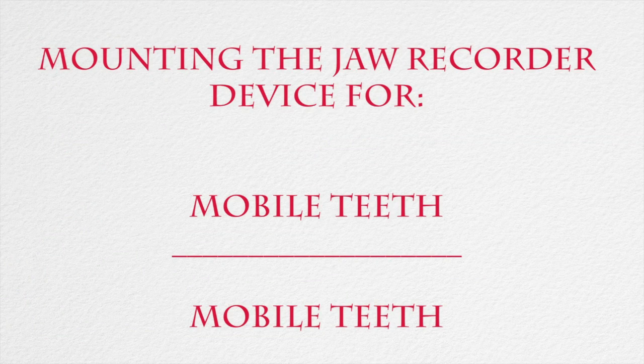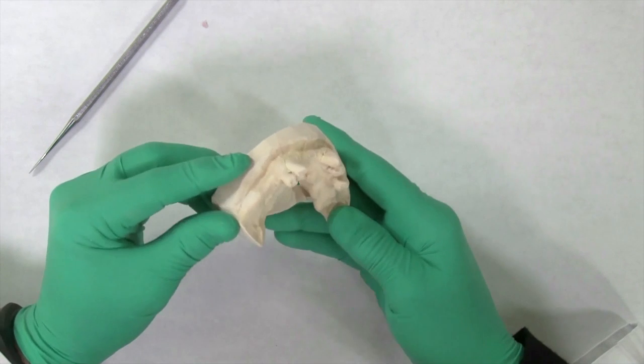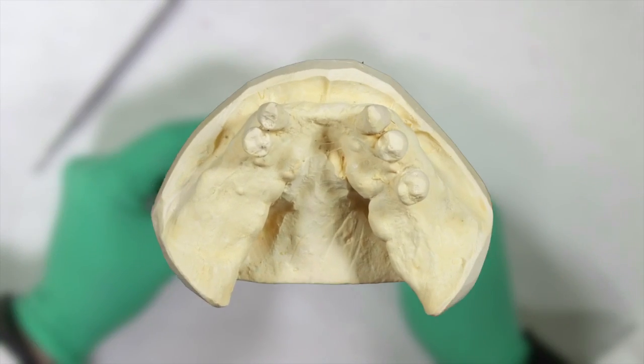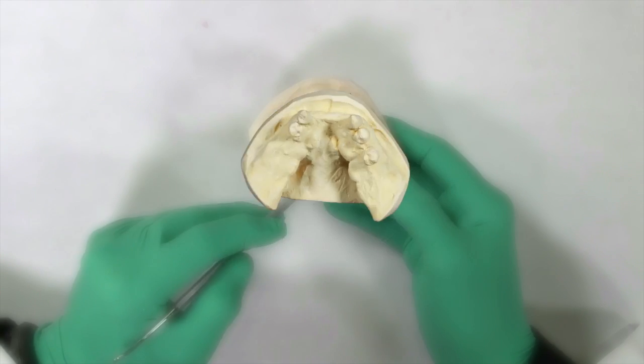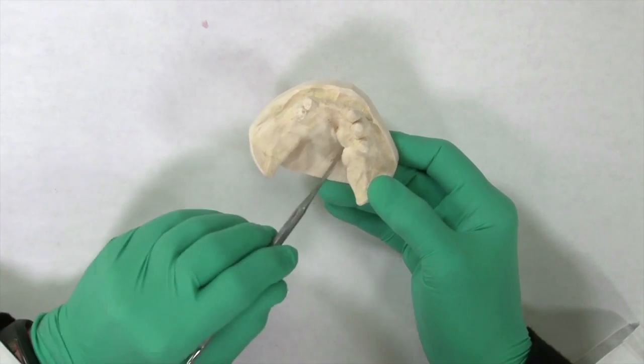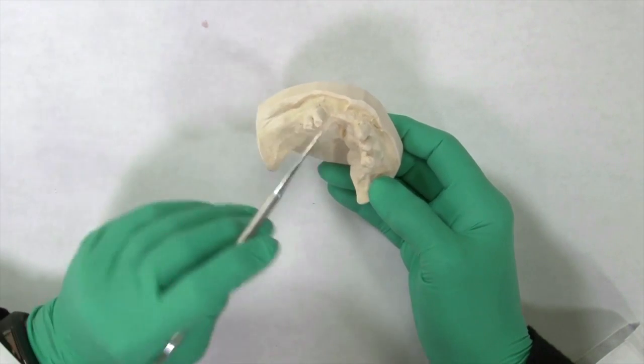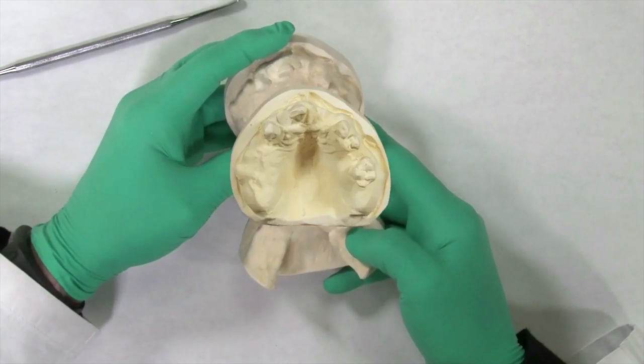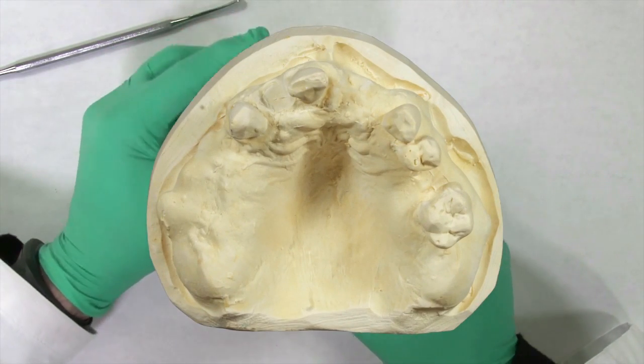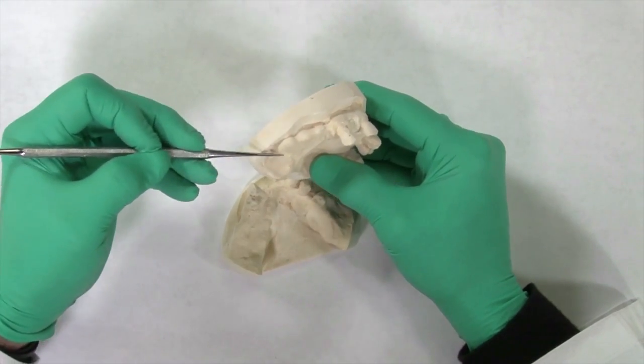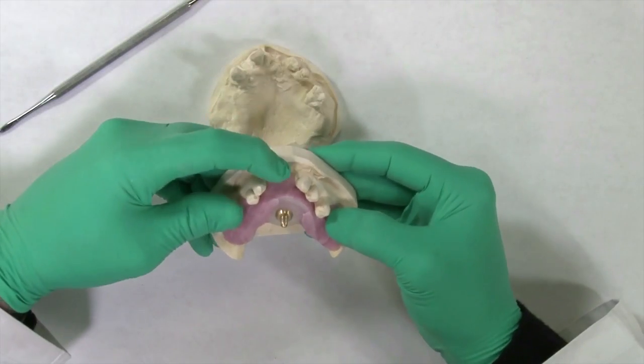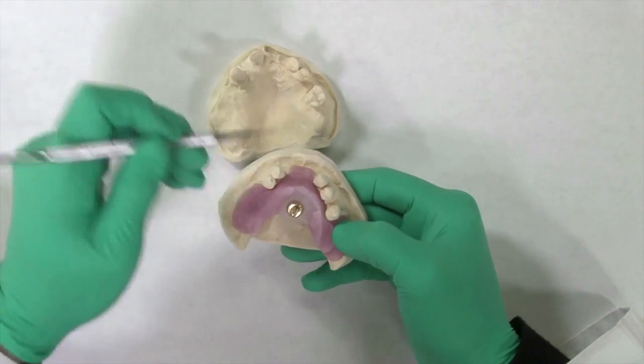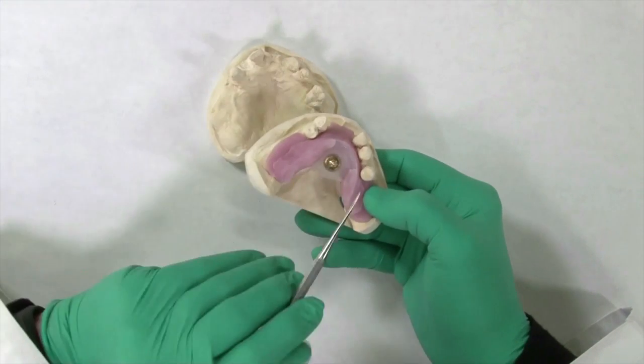Mounting the Mossad jaw recorder for mobile teeth. In this case, there is a partially edentulous mandibular arch with large tori and mobile teeth. It is virtually impossible to record a bite using conventional methods such as wax or bite registration materials, as the teeth will move when pressure is applied, and the mounting will be incorrect. On the maxillary arch, there are also mobile teeth combined with large tori. In these cases, a record base is fabricated with tissue stops in the edentulous areas for stability. A pin receiver is placed on the lower base plate, slightly below the occlusal plane.